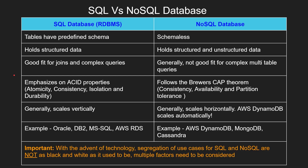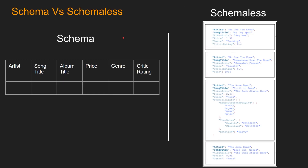Let's start by learning the differences between SQL and NoSQL databases. On the left we have SQL databases, also known as RDBMS or relational database management system, and on the right we have NoSQL databases. The first and foremost difference is that SQL database tables have a predefined schema, and NoSQL does not have any schema. Let's take a look at this in a bit more detail, because this point is very important.